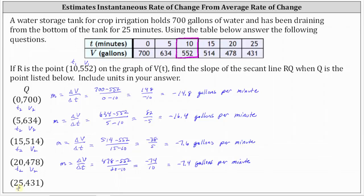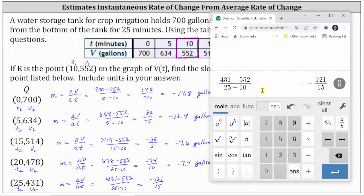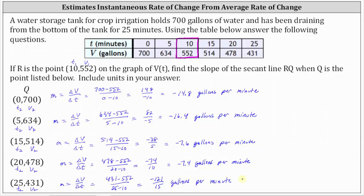Finally, for the last point Q, T₂ = 25 and V₂ = 431. The slope M = (431 − 552) ÷ (25 − 10) = −121 ÷ 15. This produces a repeating decimal, and since we're not told to round, the exact slope is −121/15 gallons per minute, which is approximately −8.0667 gallons per minute.